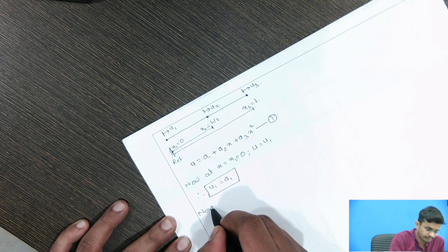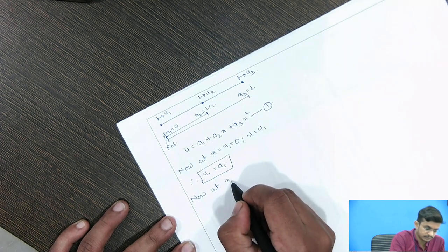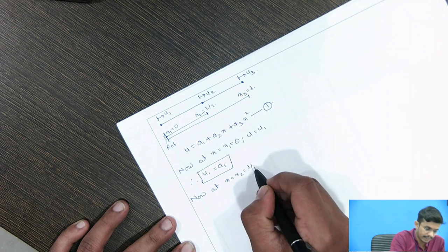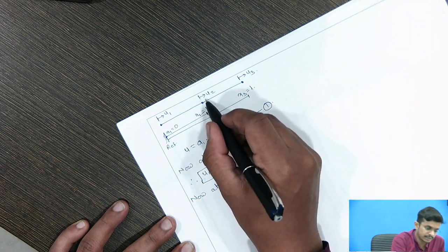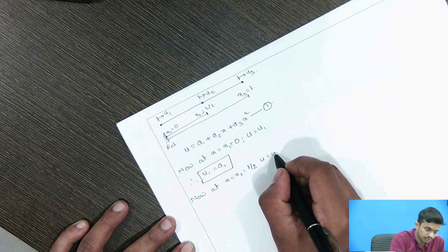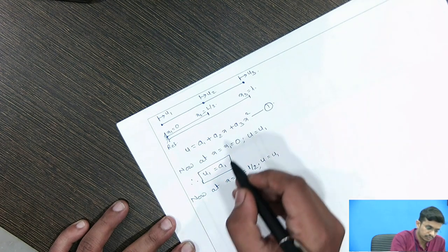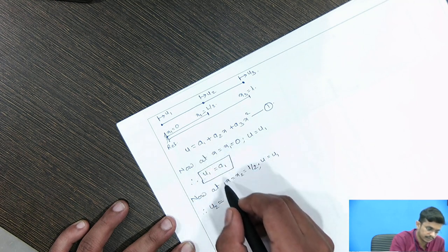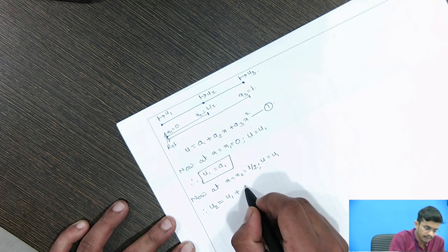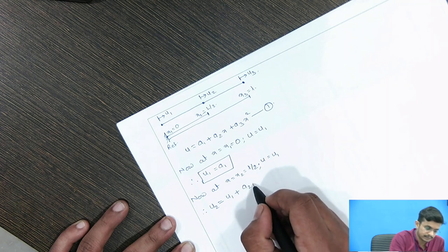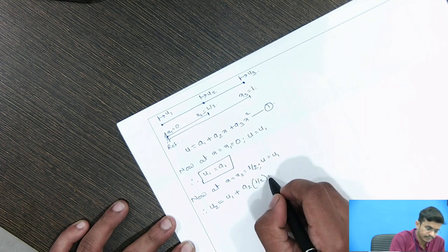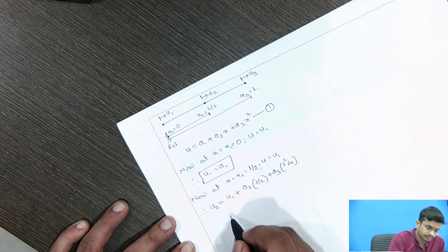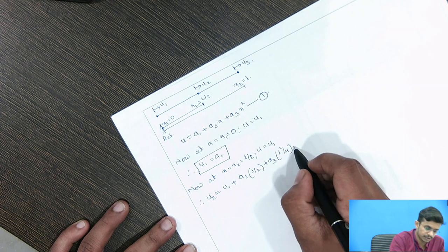At X equals X2, which is L by 2, the displacement is U2. From equation 1, substituting A1=U1 and X=L/2, we get U2 equals U1 plus A2·(L/2) plus A3·(L²/4). This will be our equation 2.